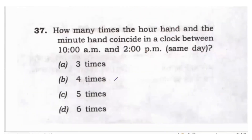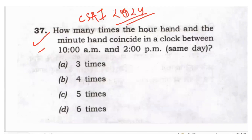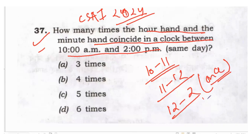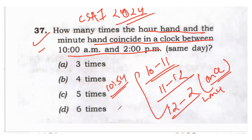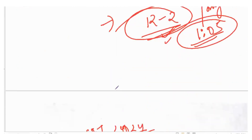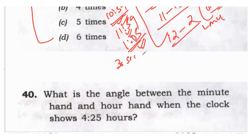Now let's apply these concepts to a question. CSAT 2024, Question 37: How many times do the hour hand and minute hand coincide between 10 a.m. to 2 p.m.? They coincide between 10 to 11, between 11 to 12, and between 12 to 2 only once — since 12 to 2 is an exception. The exact timings are 10:54, 11:59, and 5 minutes past 1. If you know this concept, you can find the answer within 30 seconds.